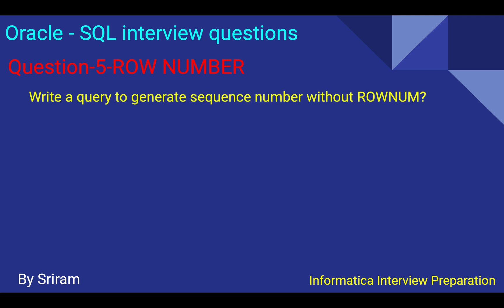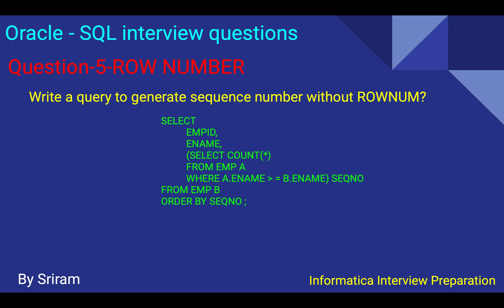Question five is about generating a sequence number without using ROW_NUMBER. In general, ROW_NUMBER is used to display the sequence of record numbers, but if we want to generate a sequence number without pseudo columns, we need an alternative query for that.